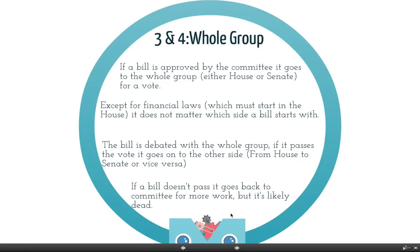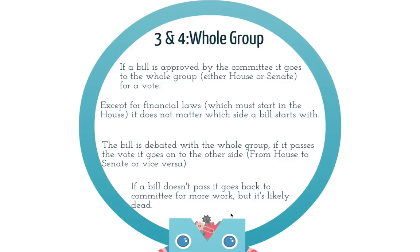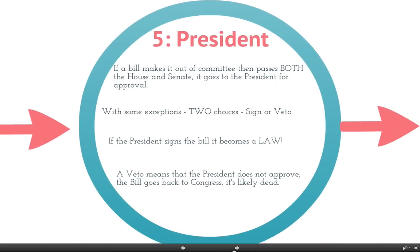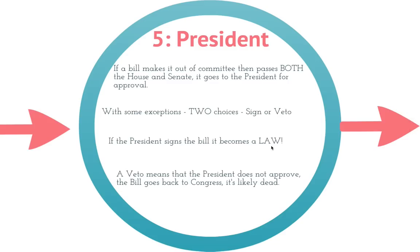Now we have our idea — it got approved by the committee and approved by both the Senate and the House. Then it goes on to step five: the President. He is not able to make laws, but he does have some say on the final law. If a bill passes both the House and the Senate, it goes to the President for approval. He pretty much has two choices: he can sign the bill, or he can veto it. If the President signs the bill, it becomes a law — people now have to follow it, it is written in law, and the process is over.